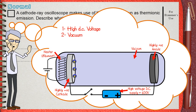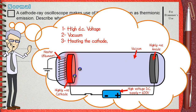Number two is vacuum. This is to avoid electrons from hitting anything in their way between the cathode and the anode. The third thing is heating the cathode, and this is what is known as thermionic emission. When the cathode is heated in the presence of vacuum and high DC voltage, electrons are able to leave the cathode and go towards the anode.